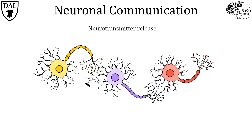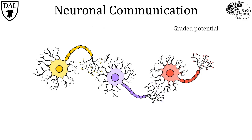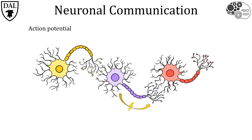These neurotransmitters are then received by the dendrites of the second neuron, producing graded potentials. Once these graded potentials reach a certain threshold, they initiate another action potential — but this time in the second neuron.